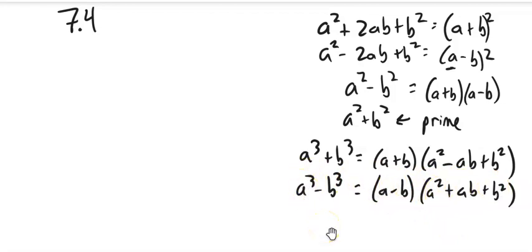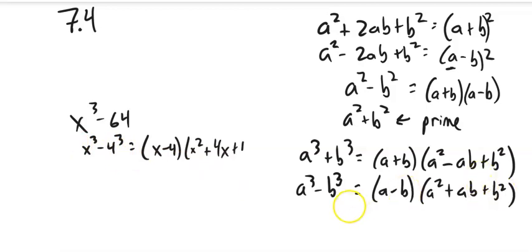That helps me do some factoring as well. Like if I had x³-64. Well, that's x³. 64 is 4³. So this is x³-4³. So x would be like my a, and 4 would be like my b. So this would factor to (x-4) times (x²+4x+16).